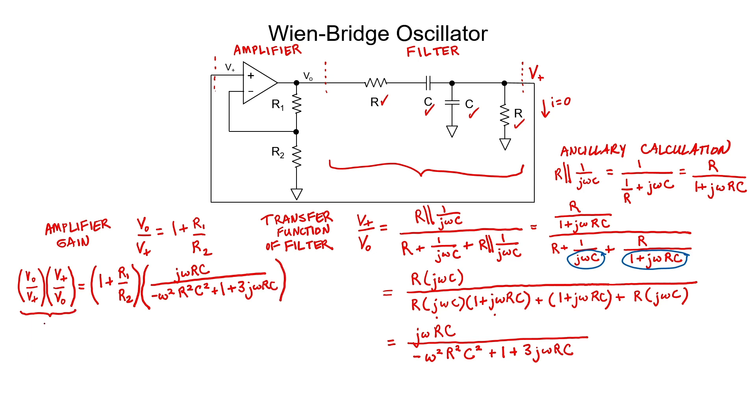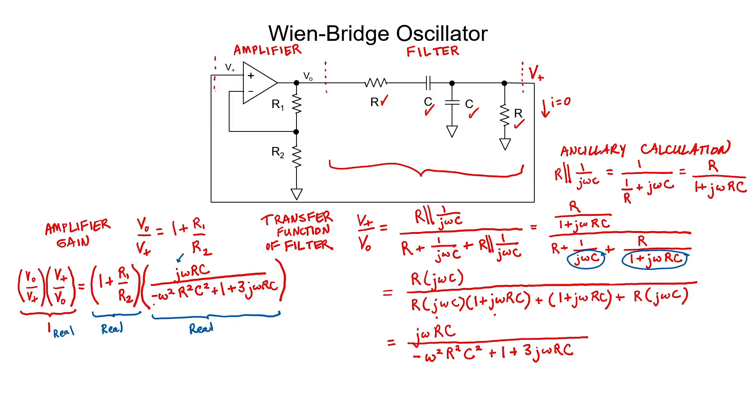This expression on the left is just 1. 1 is a real number. 1 plus r1 over r2 is also a real number. Therefore, the third expression is also a real number. However, its numerator is imaginary. The only way for a number with an imaginary numerator to be a real number is for its denominator to also be imaginary.